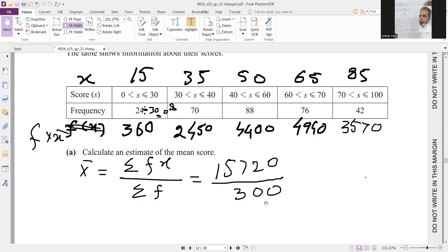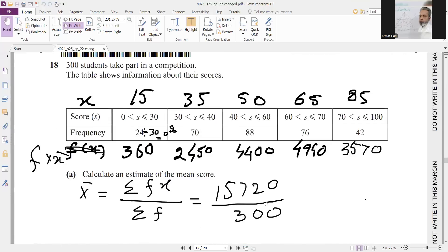Now in question 18, he is asking 300 students take part in a competition. The table shows information about their scores. Calculate an estimate of the mean score. For this, you will simply first find the value of x, that is the value of your classes. 0 plus 30 divided by 2, so you will get answer 15. Similarly with all the classes, so you will have 35, 50, 65, and 85.